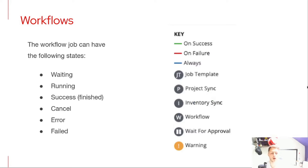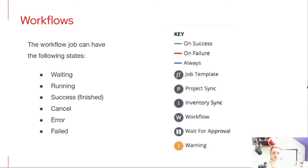A workflow job can have the following states: waiting, running, success, cancelled, error, and failed — and we'll see that later in the demo. It's really easy to understand using the workflow visualizer. With the key shown, you have on-success lines in green, on-failure lines in red, and always lines in blue, explaining exactly what each step of the workflow is. The best way to understand workflows is to jump into the demo, so that's what we'll do now.